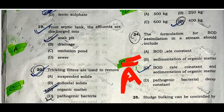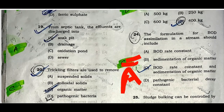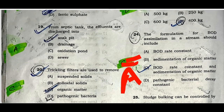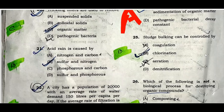Question number twenty-four: The assumptions of BOD assimilation equations should include that the BOD rate is constant. Option A is the correct one. Question number twenty-five: Sludge bulking can be controlled by chlorination. Option B is the correct one.